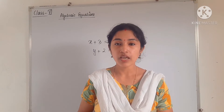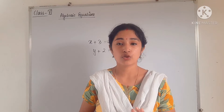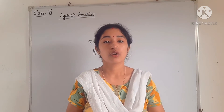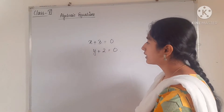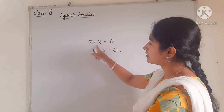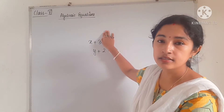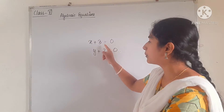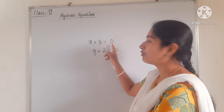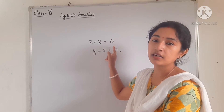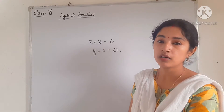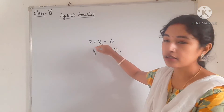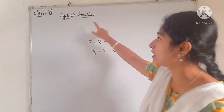Here we have to form an algebraic equation. What is the difference between an algebraic expression and an algebraic equation? Suppose x plus 3 — up to this, it is an algebraic expression. But if I write equal to and assign a number — any negative, positive number, or zero — then this is called an algebraic equation.